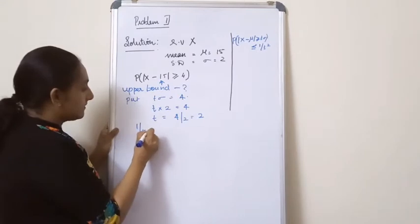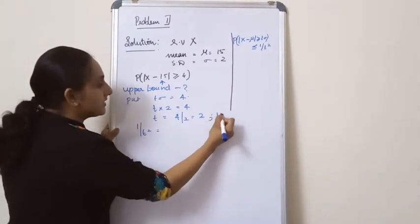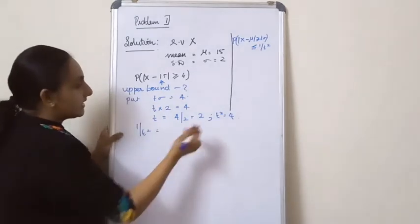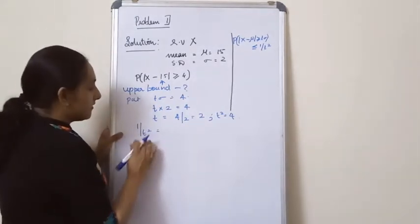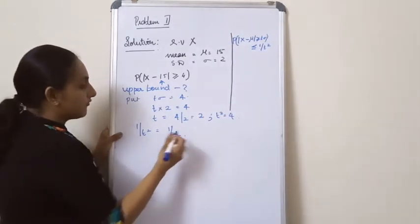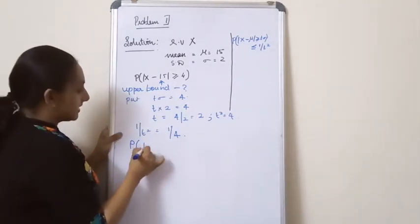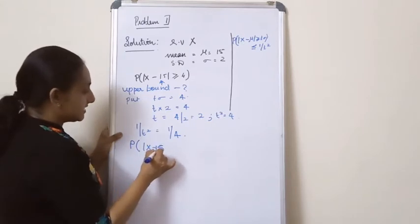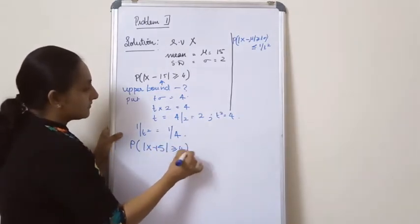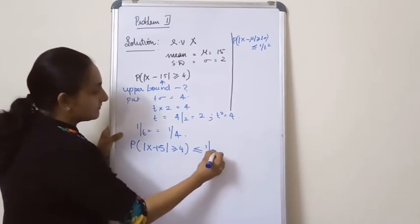What you have to find out is 1 by T squared. T squared is equal to 4, and so 1 by T squared is nothing but 1 by 4. So you have the upper bound: probability of |X minus 15| greater than or equal to 4 is less than or equal to 1 by 4.